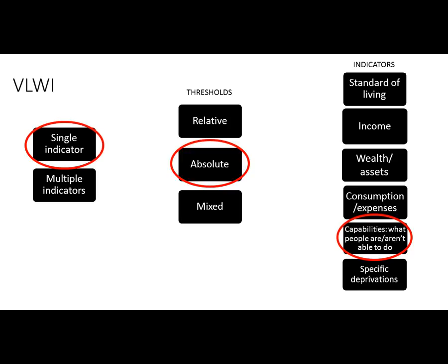VLWI and SMD are the two social exclusion indicators in AROPE. The reason very low work intensity is of such concern to the EU is that being excluded from work impairs a very important human capability. It may also be about low income, but more importantly it's about losing out on self-esteem, purpose, challenges, lifelong learning, a social network, friends, and mental health benefits — all things people get through work beyond just a paycheck.